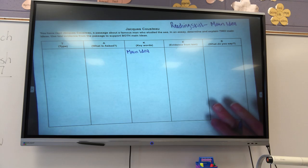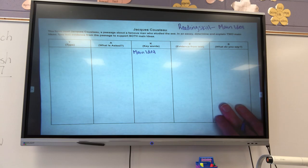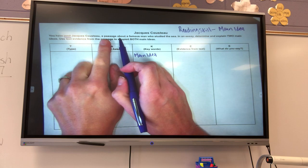So, obviously, one of my keywords is going to be main idea. The next thing I want to do is go through and find all of my verbs in this prompt, and I'm going to underline them.